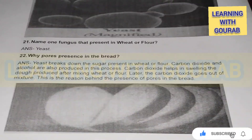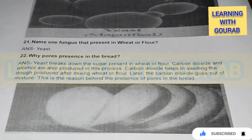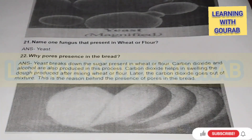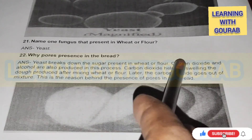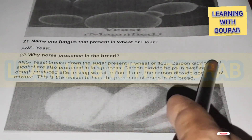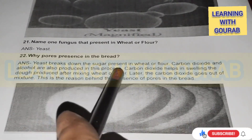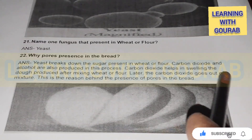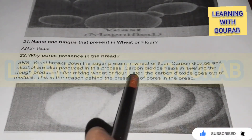Which acid does Lactobacillus form in milk? Answer: Lactic acid. Next question: What is called yeast? Answer: Yeast is a kind of single-celled fungus. Name one fungus present in wet flour. Answer: Yeast. Why are pores present in bread? Answer: Yeast breaks down the sugar present in wet flour; carbon dioxide and alcohol are produced. Carbon dioxide helps in swelling the dough. Later the carbon dioxide goes out of the mixture, which is the reason behind the presence of pores in the bread.